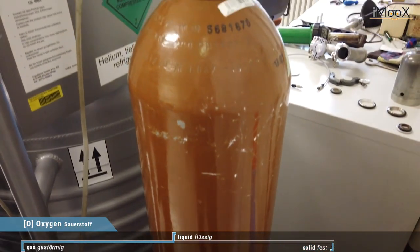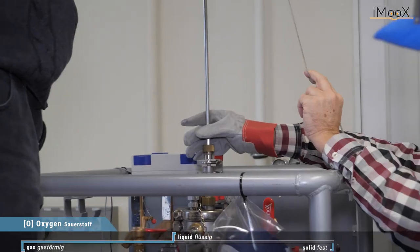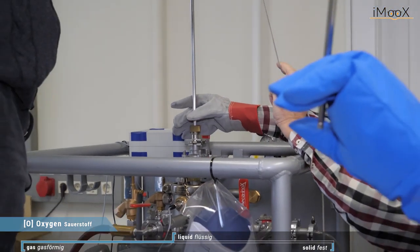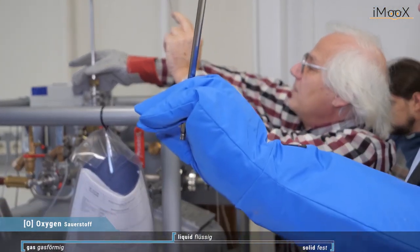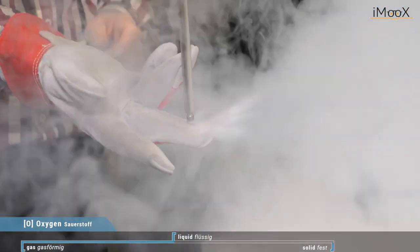And here we have now a helium tank with liquid helium in it. Liquid helium has a temperature of 4.2 Kelvin and we fill that into our tube.